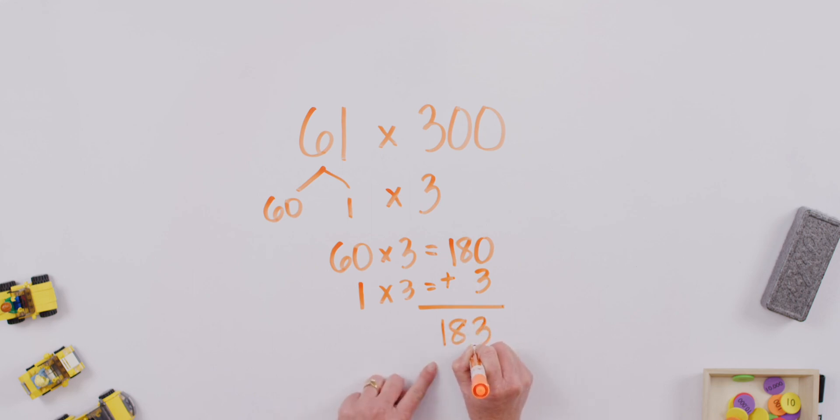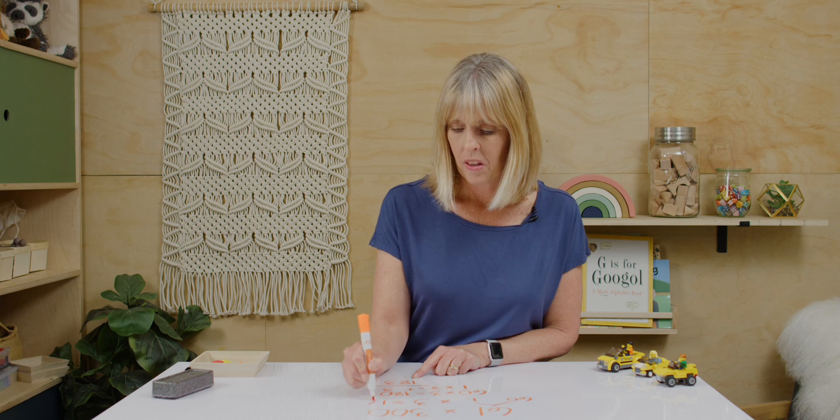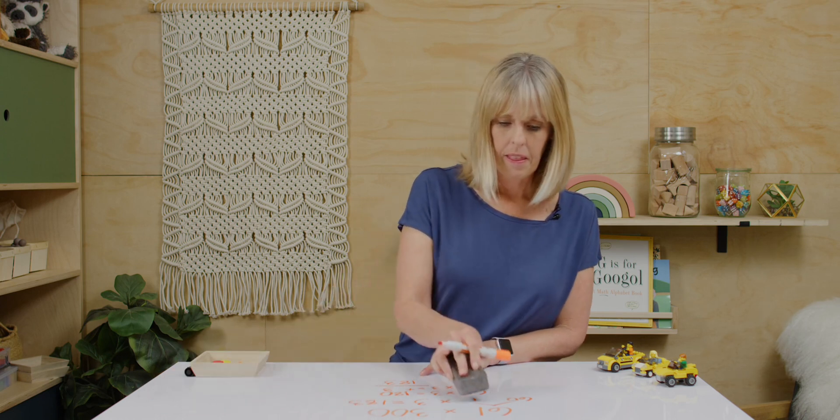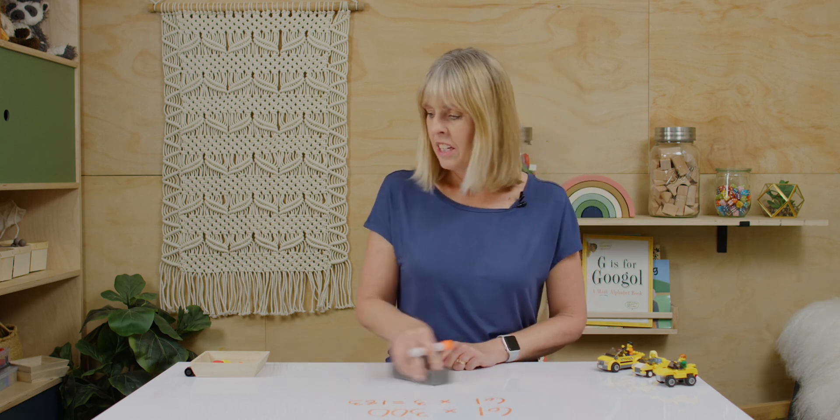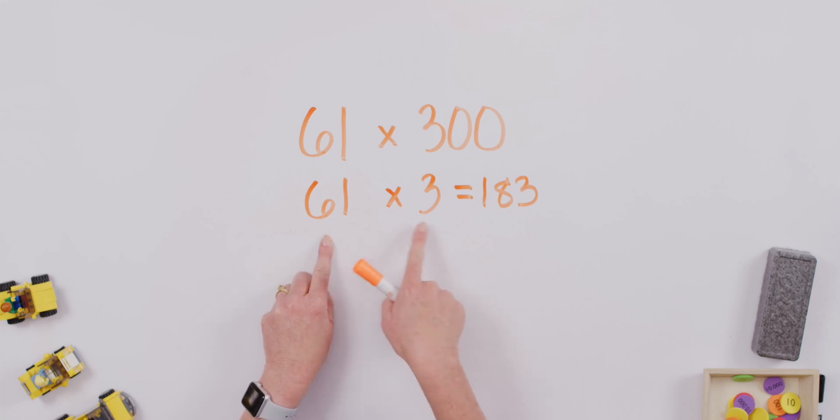So we just discovered that 61 times 3 is 183. Once we know that, what other strategy can we use? If we're multiplying 61 times 3 ones, but we want to multiply it by 300s. We would add on how many zeros? 2. So our final answer will be 18,300.